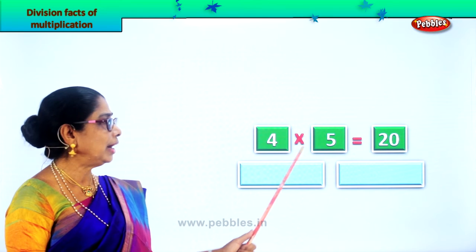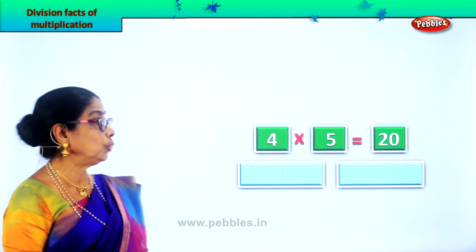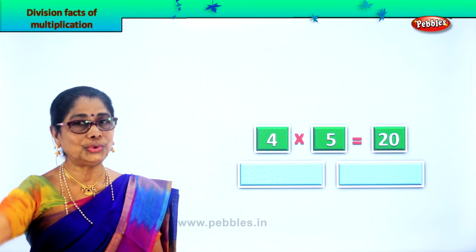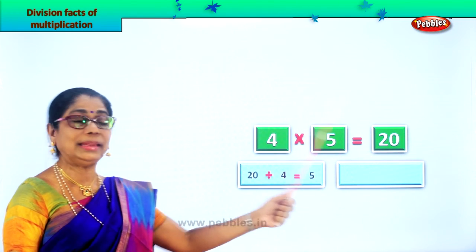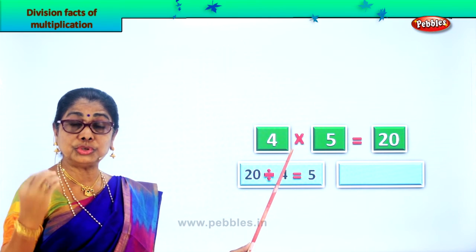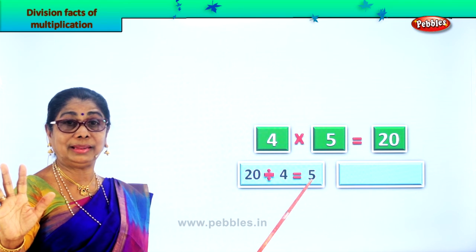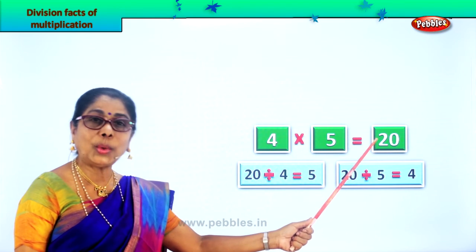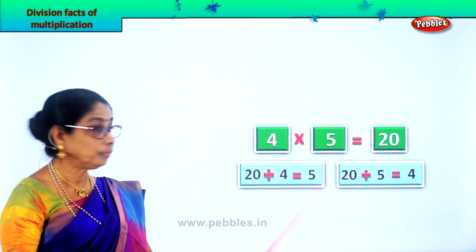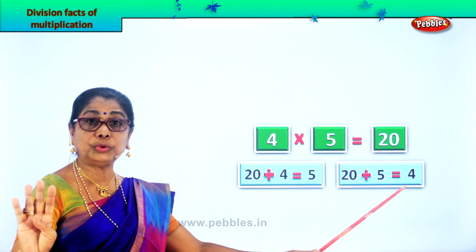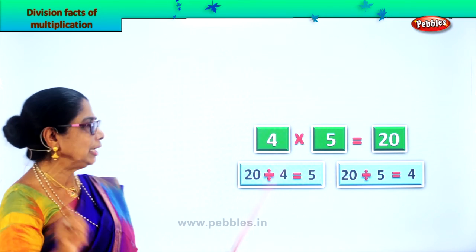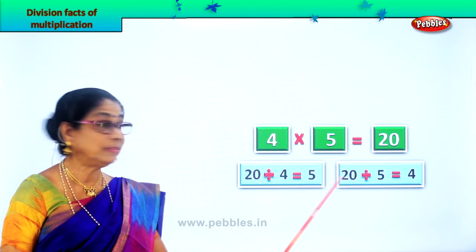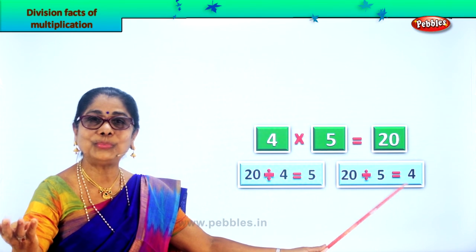Let's take another sum. Four fives are twenty — the multiplication fact given to you is four into five, four fives are twenty. Now let's get two division facts. If you divide twenty by four, you have to get the answer five — four goes into twenty five times, so twenty divided by four gives you the answer five. Next, twenty divided by five — five goes into twenty four times — so twenty divided by five gives you the answer four. For one multiplication fact, four fives are twenty, you get two division facts. Did you enjoy?